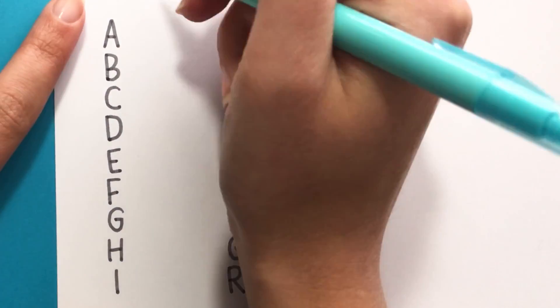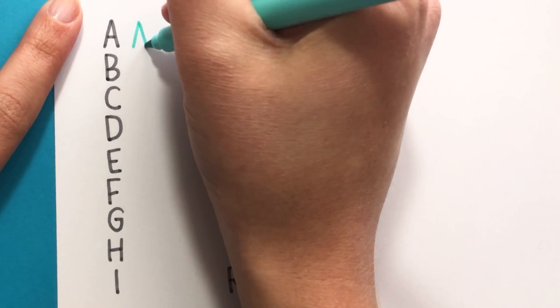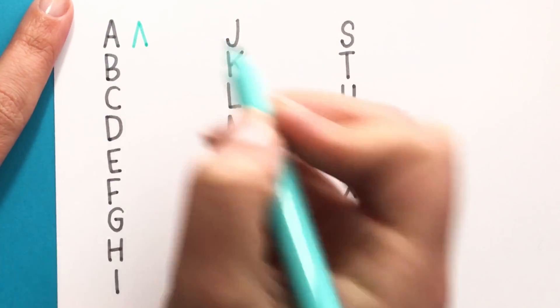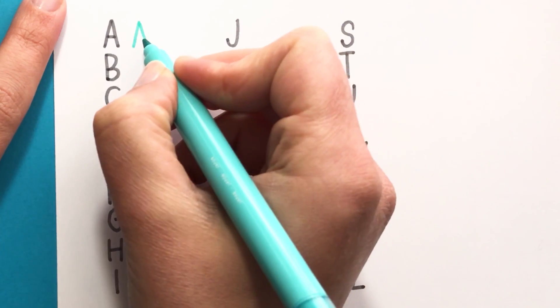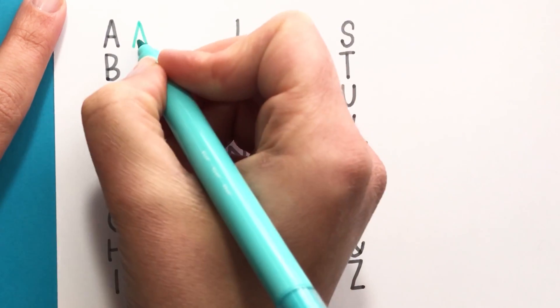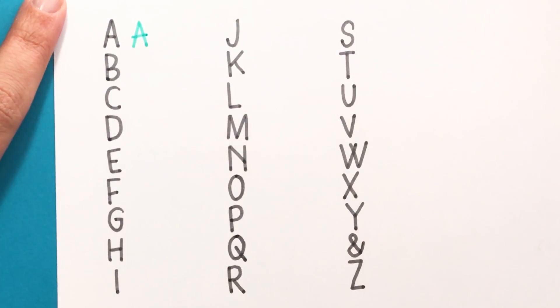So for the A, instead of making it perfectly symmetrical, you could try slanting it a little bit or maybe making it a little bit wider on the bottom. I also like to extend my crossbar a little bit beyond the edges of the triangle.